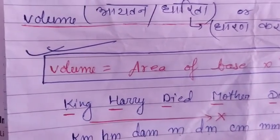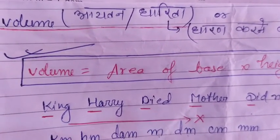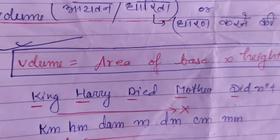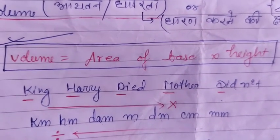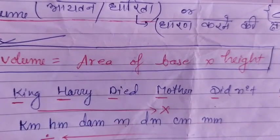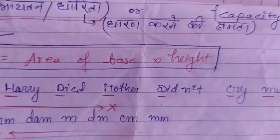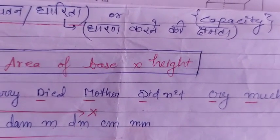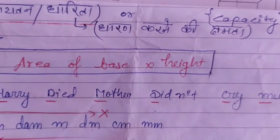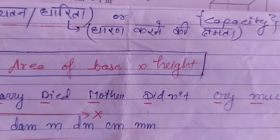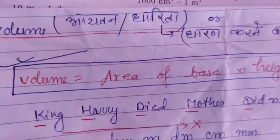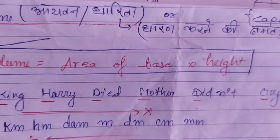3D objects are those which we can hold but cannot draw their complete figure on paper. Volume can be evaluated by the area of the base of the object — the plane on which an object is kept — multiplied by its height. The product of area of base into height gives you the volume.